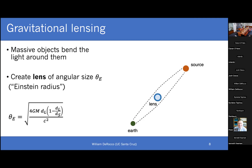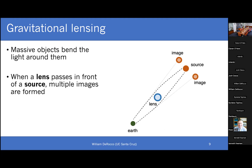This can be treated as a standard optics problem, as if you had a lens focusing light from the source. The size of that lens on the sky is the Einstein radius, theta_E — a function of the mass of the lens, the distance to the lens D_L, and the distance to the source D_S. If you trace these light rays back from Earth, you see two different images projected on the sky. This is the regime of strong lensing, where you get multiple images, and at perfect alignment you get a beautiful Einstein ring.